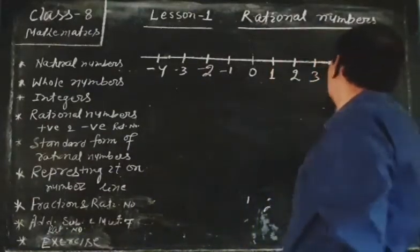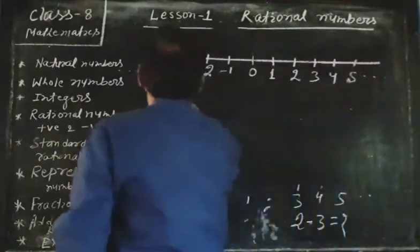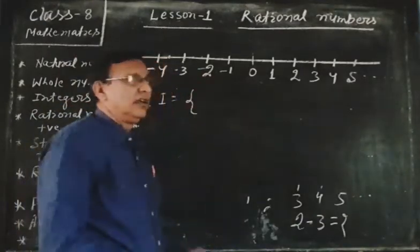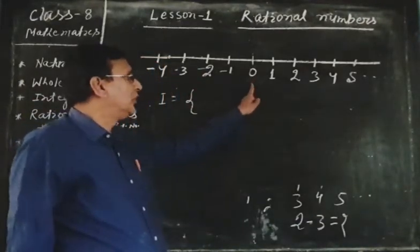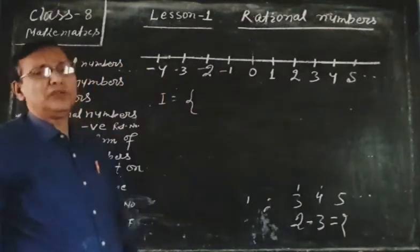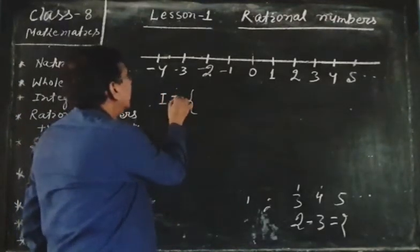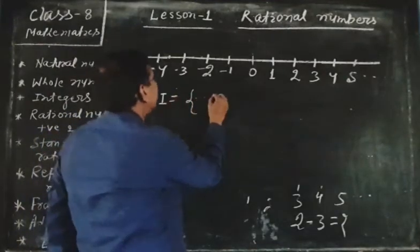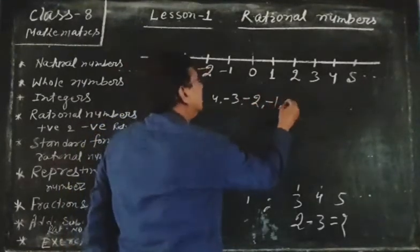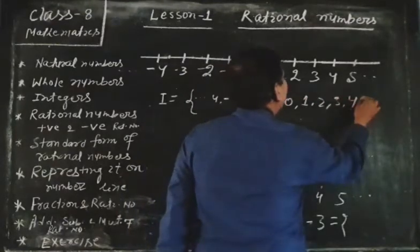This makes a group of numbers called integers. An integer is a group of numbers in which 0, counting numbers, and the negatives of the counting numbers are all included. We can denote it by Z, and the numbers are: minus 4, minus 3, minus 2, minus 1, 0, 1, 2, 3, 4.